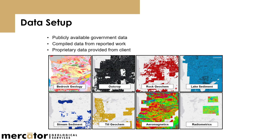Talking about the data and where it comes from — there are different sources. The most easily accessible is publicly available government data; we just download it from the webpage. These examples are from Quebec, where we did a lot of work in the James Bay area for lithium last year. We can also compile data manually from PDF reports — we're just digitizing data. The best case scenario is when our client brings us data already organized. We can mix all three types of data sources, but it does take work to amalgamate the data — they need to be formatted and unified.